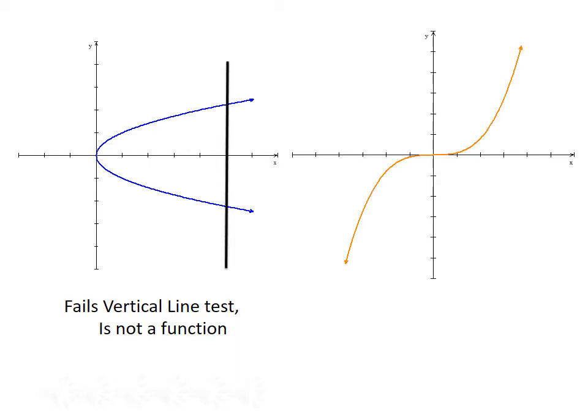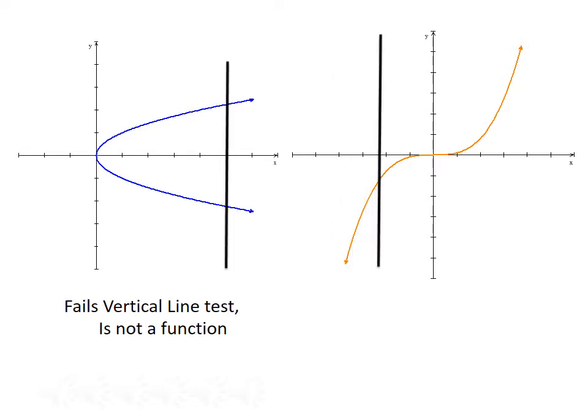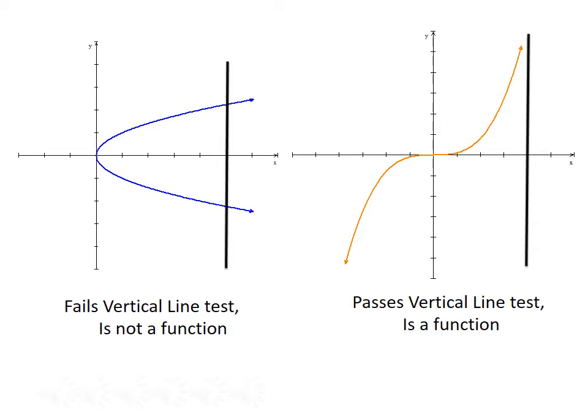Here's one last example. Try and see if you can figure whether or not this is a function. Again, we use the vertical line test, and since the vertical line intersects the graph at most once at each point, this passes the vertical line test, and so it is the graph of a function.